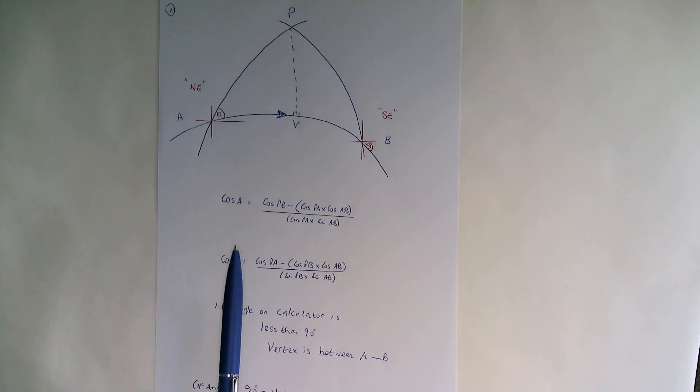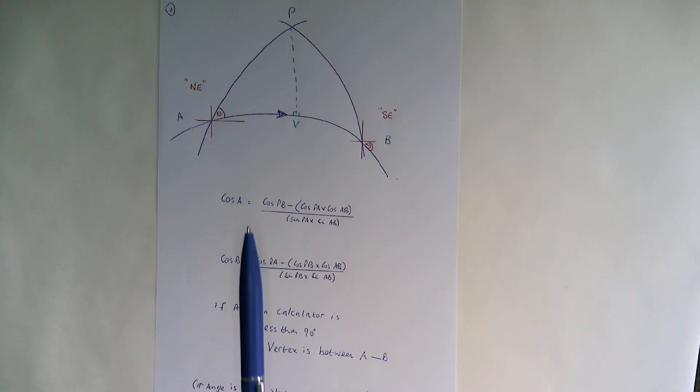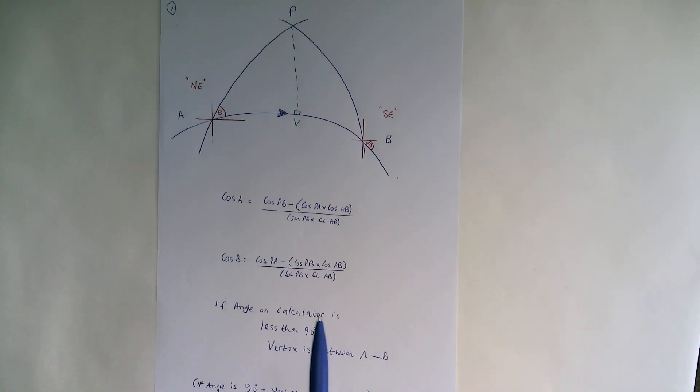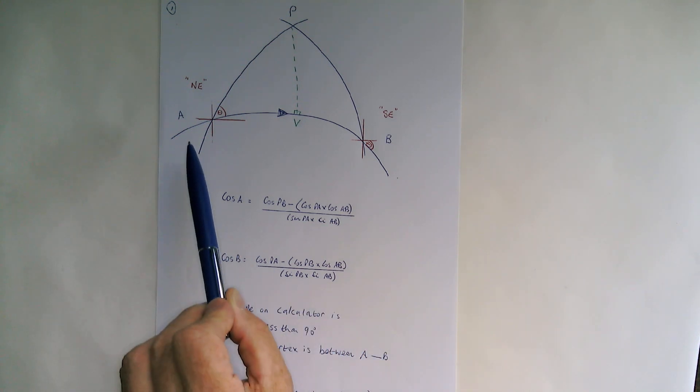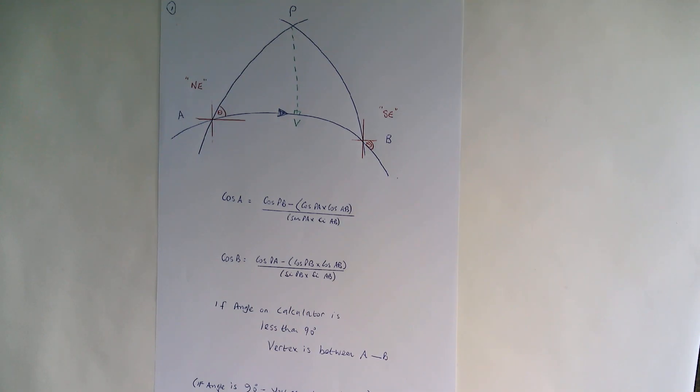If when you use this formula, the angle on your calculator is less than 90 degrees for cos A, then the vertex must be in front of you. If the angle exceeds 90 degrees, then the vertex must be behind your initial position.